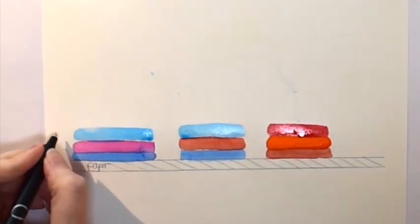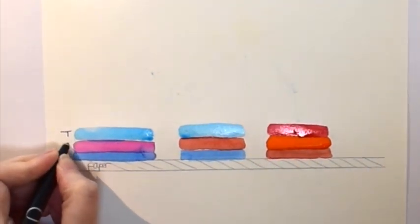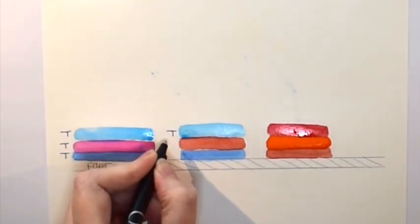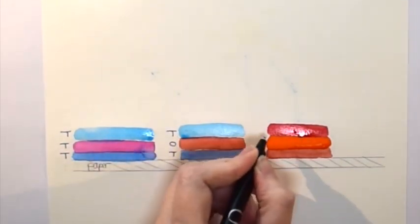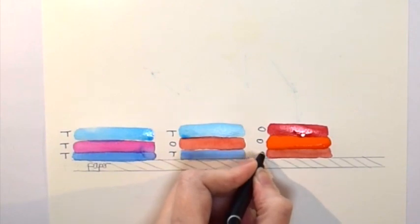So we have transparent, transparent, transparent. Transparent, opaque, transparent. And opaque, opaque, opaque.